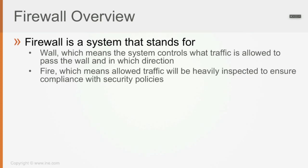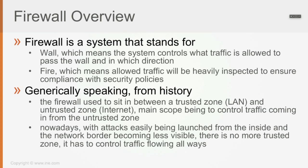Like in a war zone when someone passes through a checkpoint — which is basically a firewall — they are heavily inspected for identity and asked where they're going and what they're trying to do. Historically speaking, the firewall used to sit between a trusted zone — the LAN side, with users, printers, IP cameras, and everything else — and an untrusted zone, which was the internet. The main scope was to control traffic coming in from the untrusted zone.